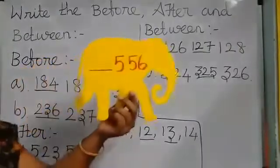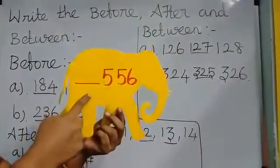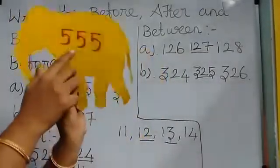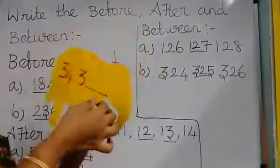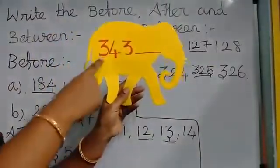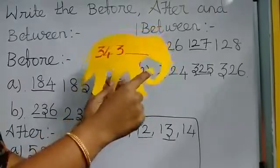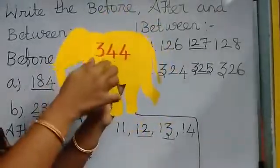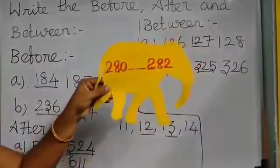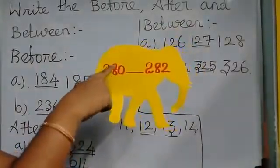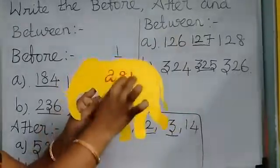See, children. What is that number? 556. What will come as the before number? 555. Very good. Next: 343. What will come as the next number? 344. Next one: 280 and 282 — what will come as the between number? 281. Very good.